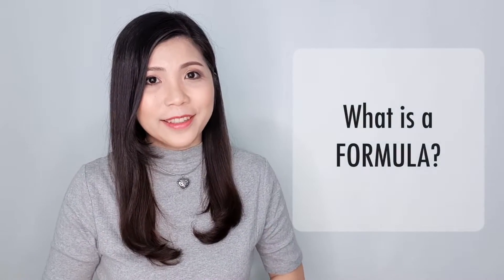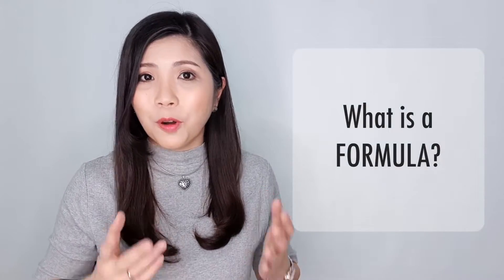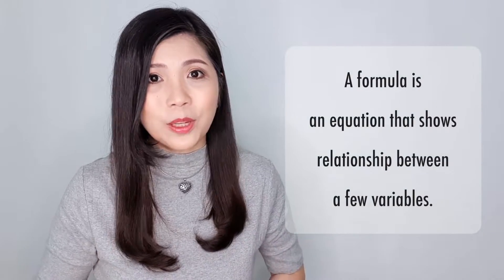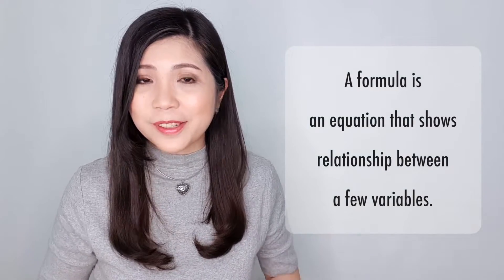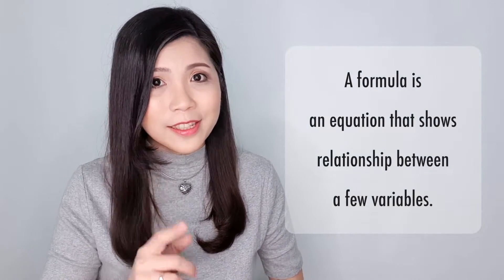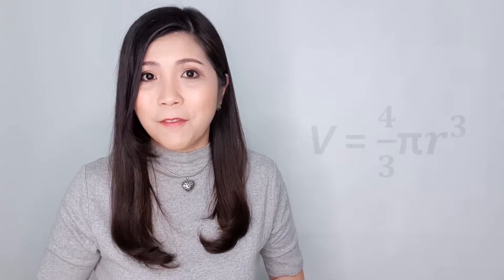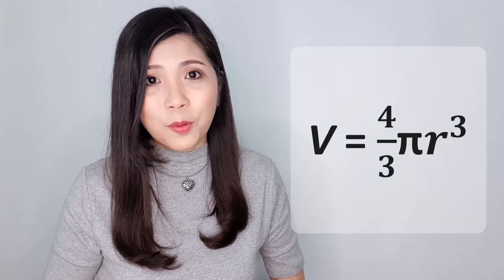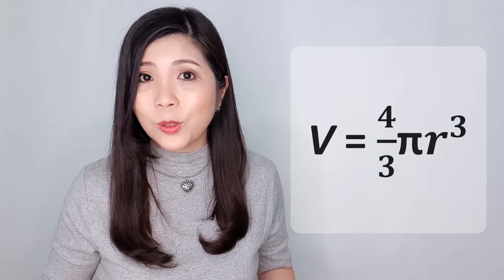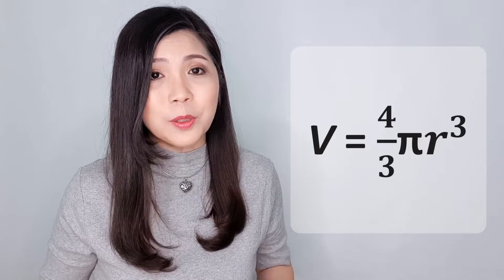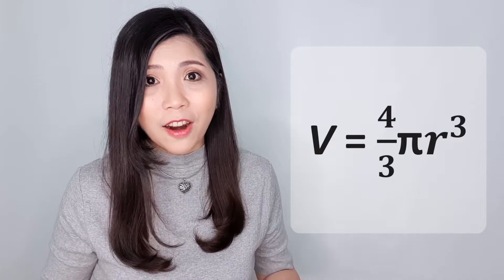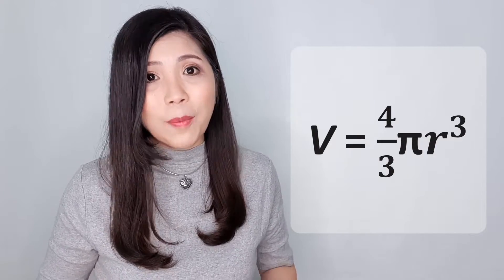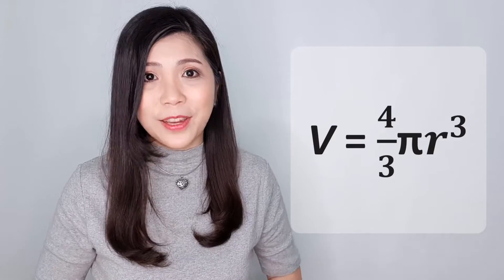What is a formula? A formula is an equation that shows the relationship between a few variables. For instance, v equals 4 over 3 pi r cubed is the formula that shows the relationship between v and r, and pi is a constant value whereby the value is fixed.